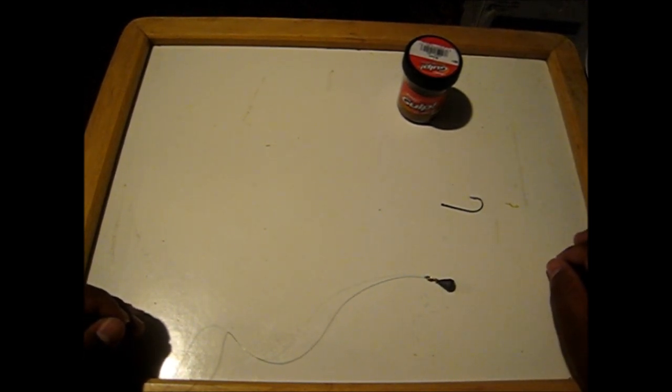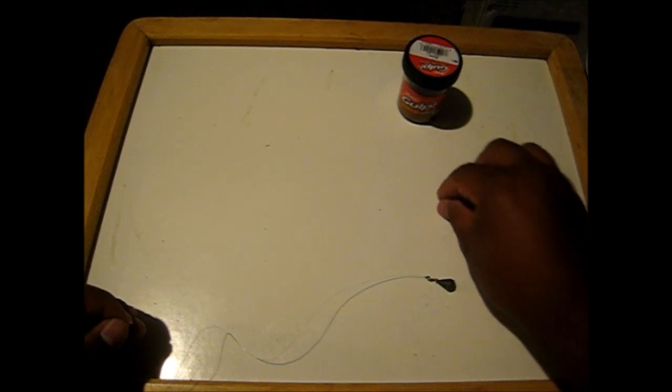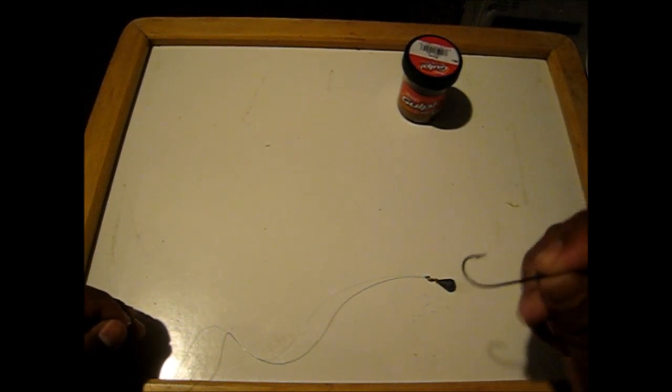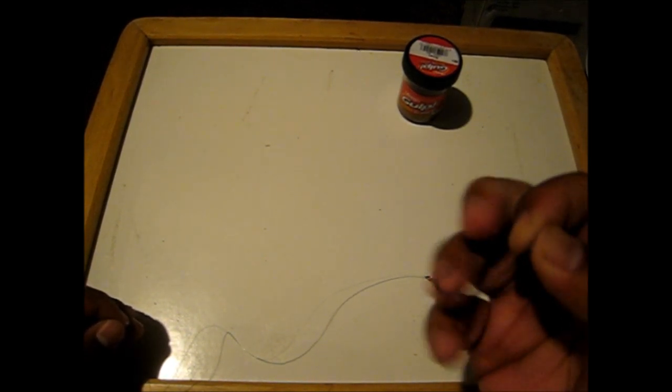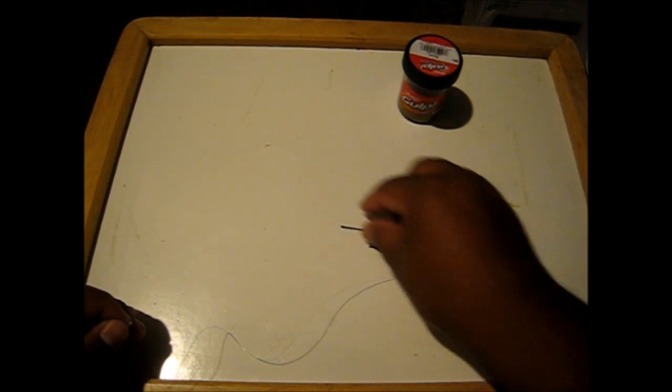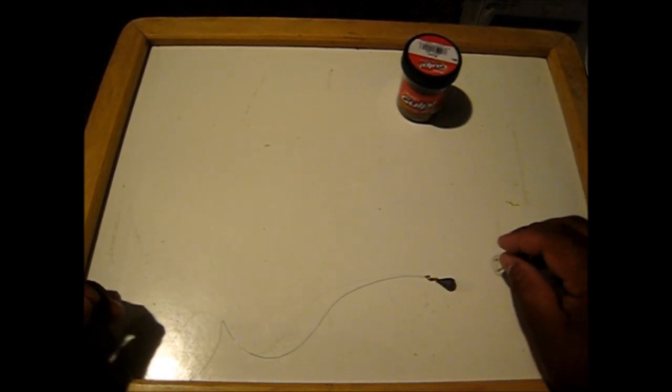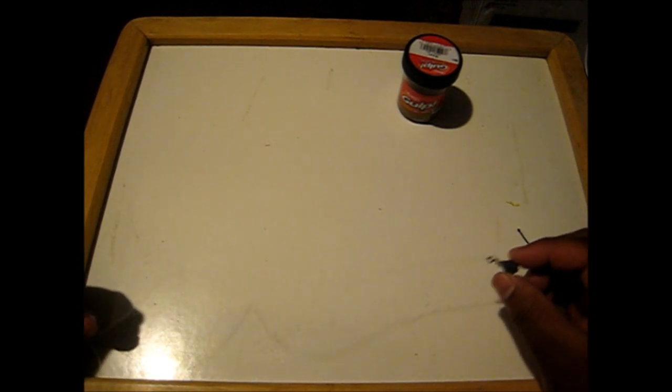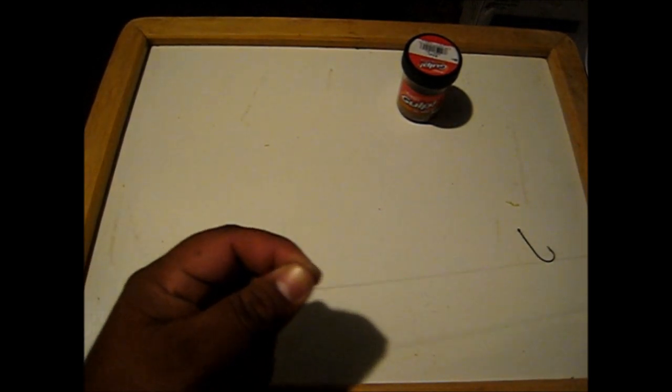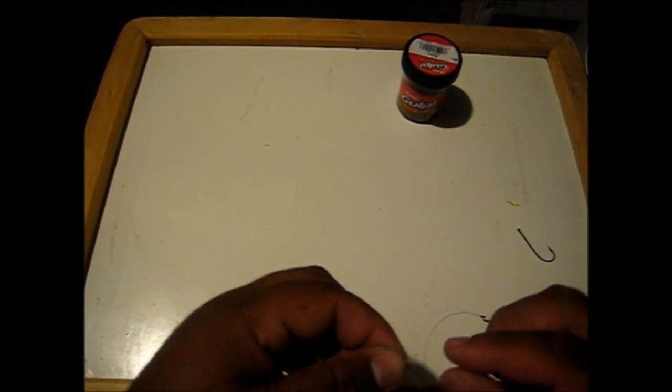So I'm using the smaller one. The hook is a bigger hook than I normally use. I usually try to use just like a regular J hook, but for the purpose of this video we're going to go ahead and use this one. So once we get the weight on about two feet above the weight on the line, I like to pinch the line in half.